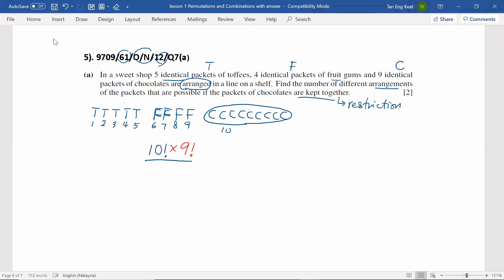And again, don't forget, there are five packets of toffee that are identical. Hence, divide out five factorial to get rid of those repeated ways. So, as you can see, although nine chocolates, they can still arrange among themselves. But at the same time, they are identical. Hence, this number of ways will cancel out each other.